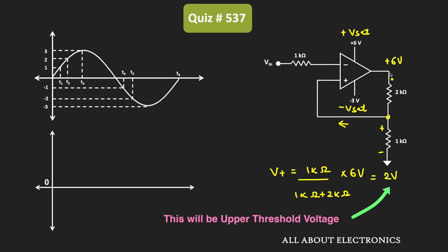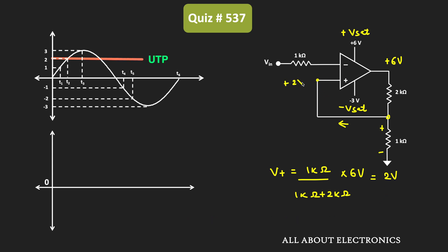When the output of the op-amp is +6V (or +Vsat), V+ equals +2V. In this condition, when the input signal Vin is less than +2V, the output will be +Vsat (+6V), because V+ is greater than V-. Looking at the input signal, up to time point t2 the input is less than +2V, so the output remains +6V up to that point.